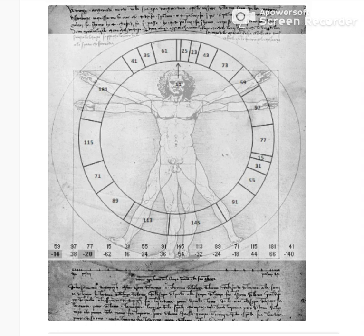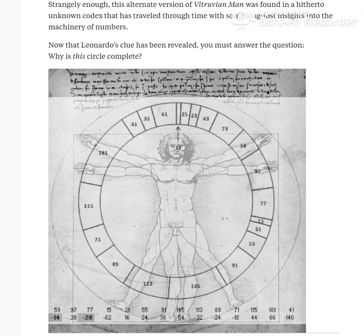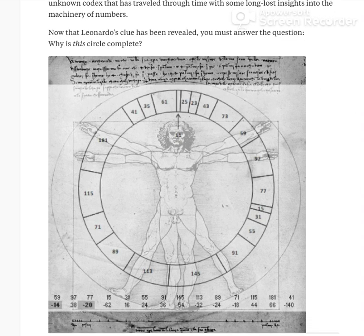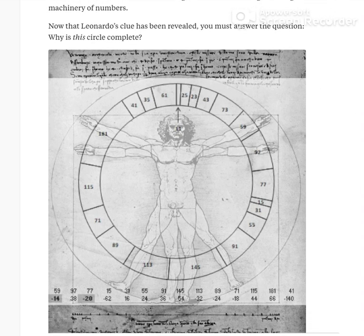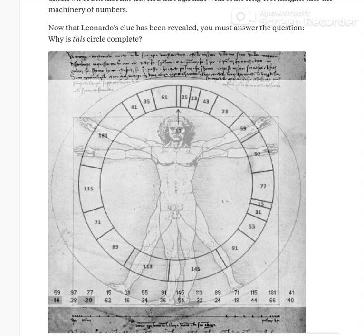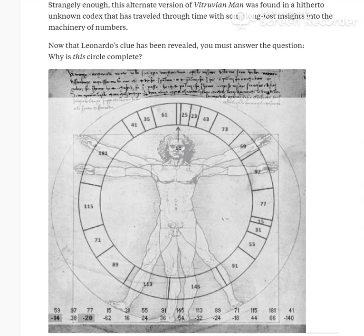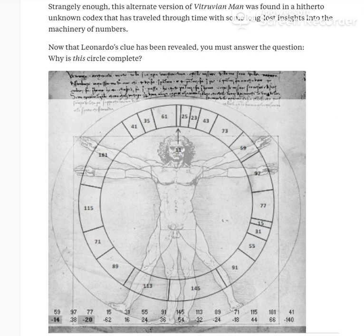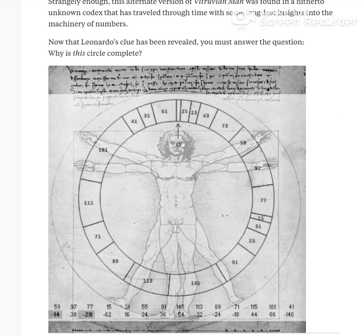Well, it just so happens that this is an alternative version of it. It was discovered recently in a long-lost codex that has reached the present time. And we're going to try to understand what these numbers mean.